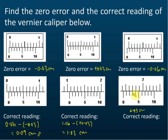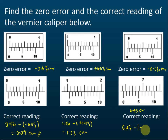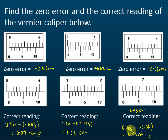The vernier scale reading is 0.03 — one, two, three — so 6.43 minus the zero error negative 0.06, therefore the answer is 6.49 cm.